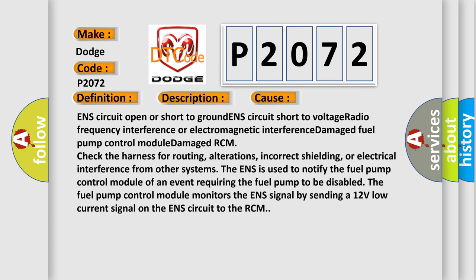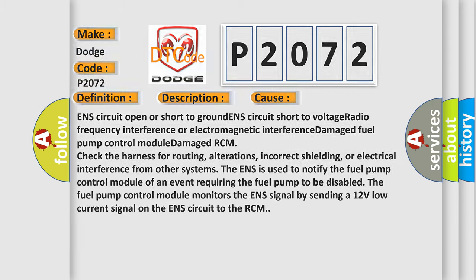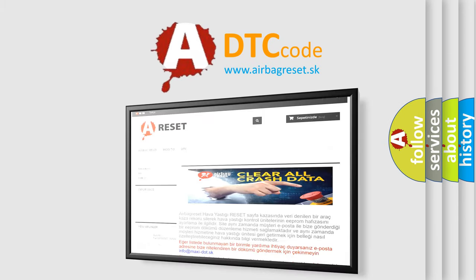This diagnostic error occurs most often in these cases: ENS circuit open or short to ground, ENS circuit short to voltage, radio frequency interference or electromagnetic interference, damaged fuel pump control module, or damaged RCM. Check the harness for routing, alterations, incorrect shielding, or electrical interference from other systems. The ENS is used to notify the fuel pump control module of an event requiring the fuel pump to be disabled. The fuel pump control module monitors the ENS signal by sending a 12-volt low current signal on the ENS circuit to the RCM. Thank you for your attention and support.